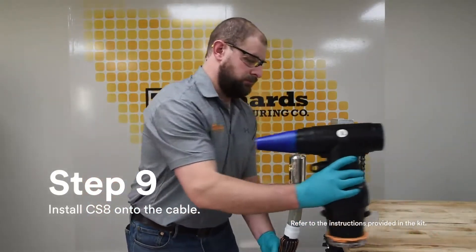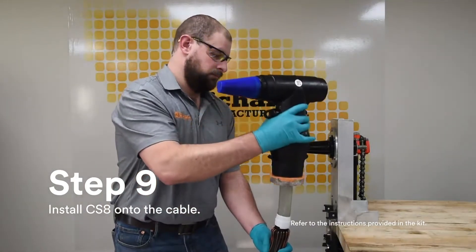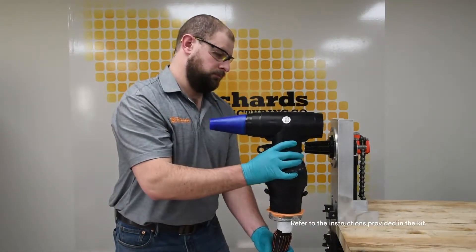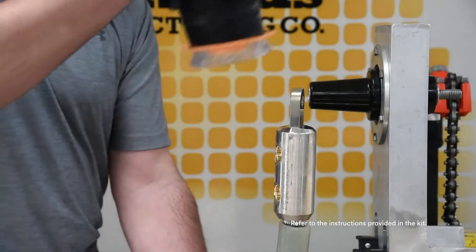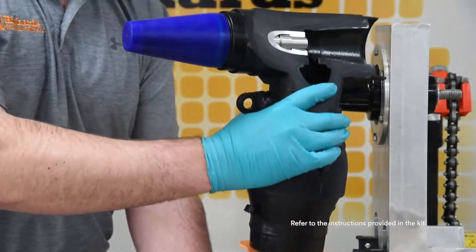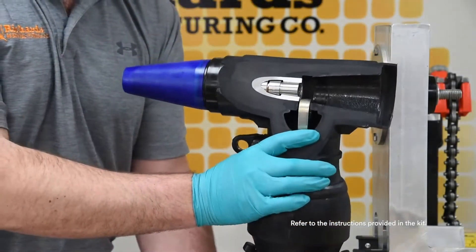Install CS8 onto cable until the lug is fully seated within the housing. A cutaway view illustrates the full seated positioning of the lug spade inside the CS8 housing.